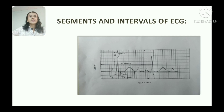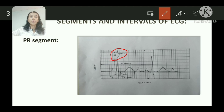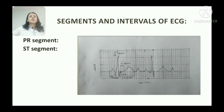Let us start with the PR segment. As you can see in this diagram, the PR segment is an isoelectric period following the P wave. The duration of the PR segment is 0.04 seconds. It is the period of conduction pause at the AV node.